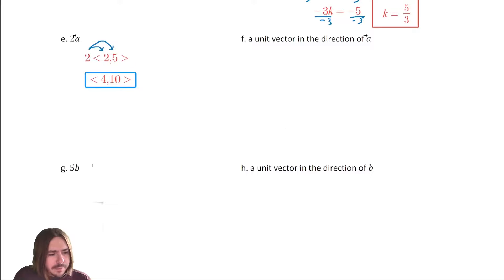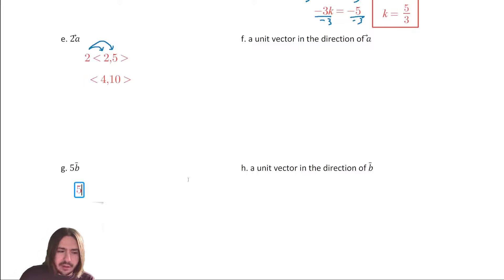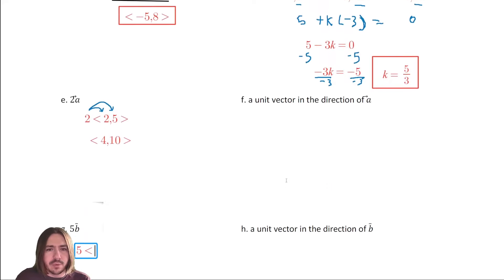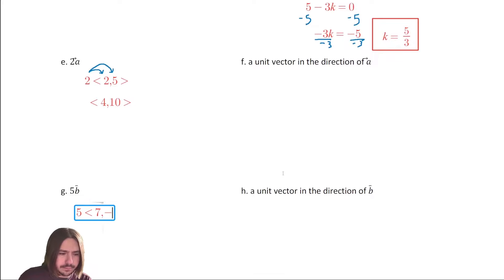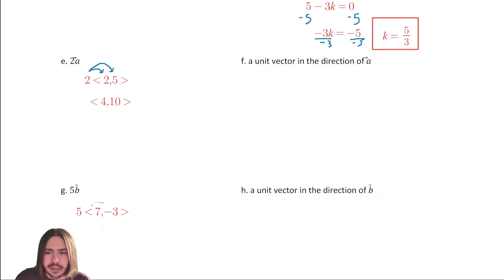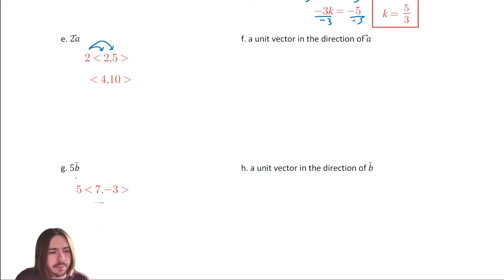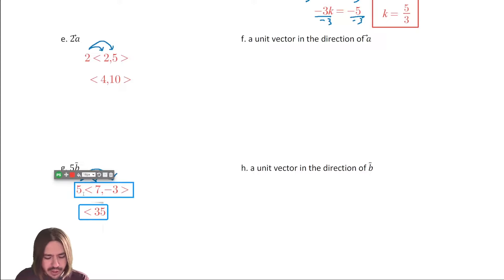G is just asking you to multiply scalar five by vector B, which was seven comma negative three. Same deal — multiply the five by both seven and by negative three. We get thirty-five comma negative fifteen.